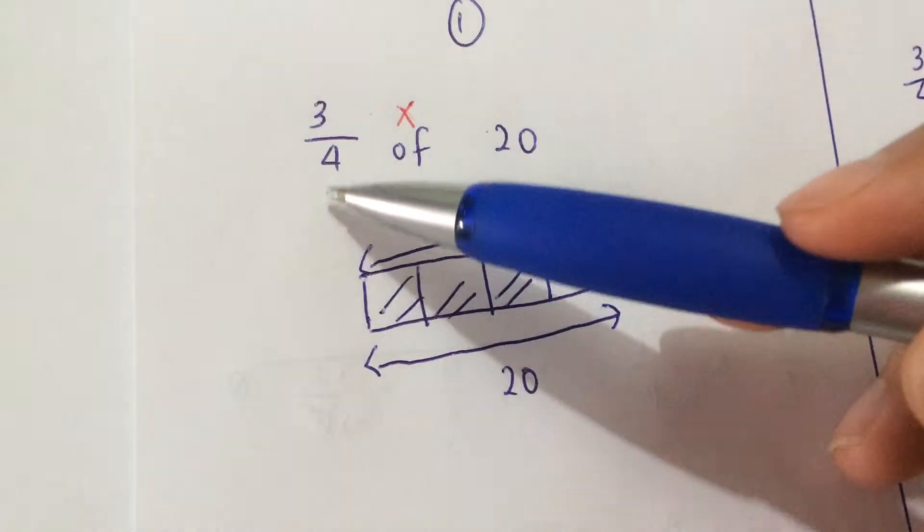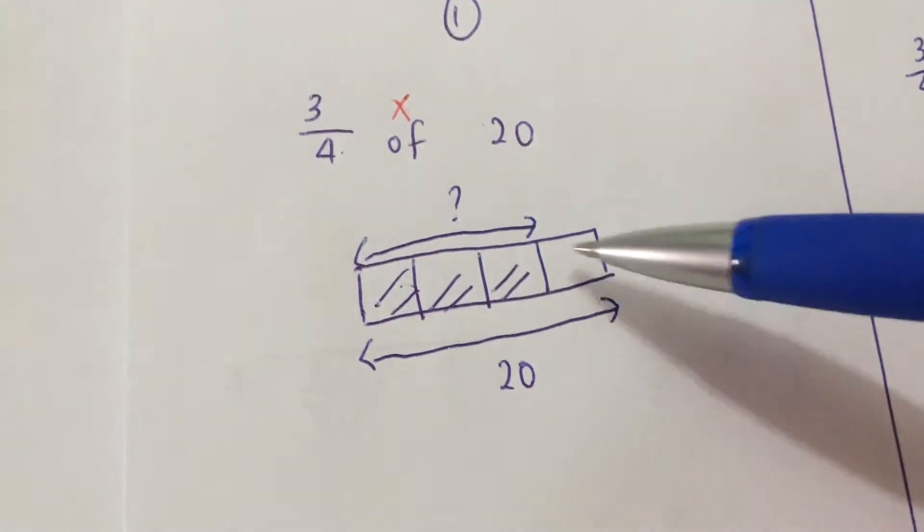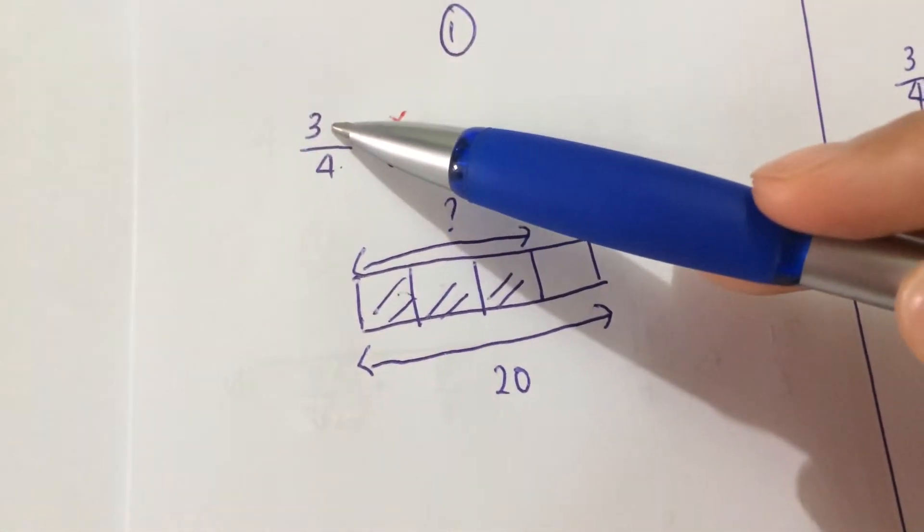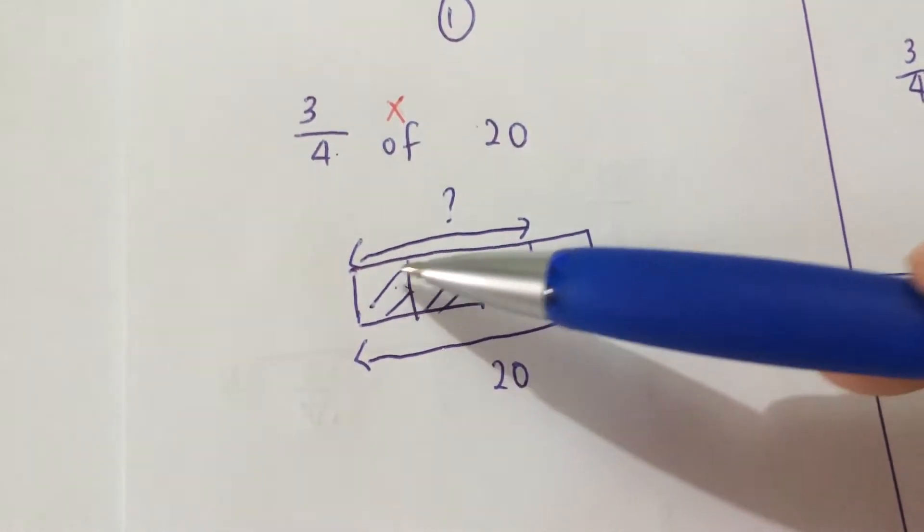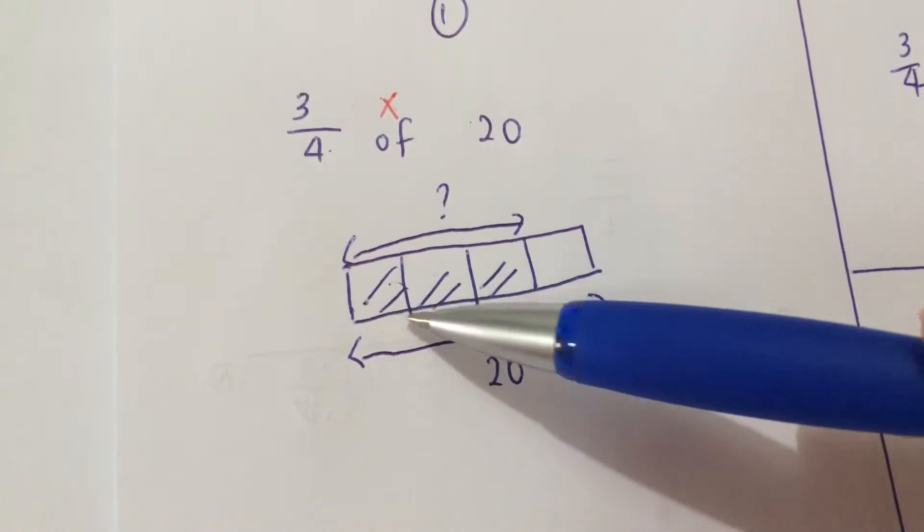I repeat, you have 4 total parts: 1, 2, 3, 4. You shade 3 parts, and you want to find 3 parts. And your total of these 4 parts is 20.